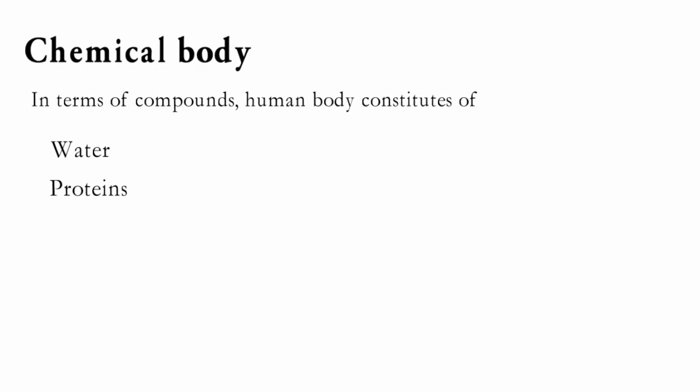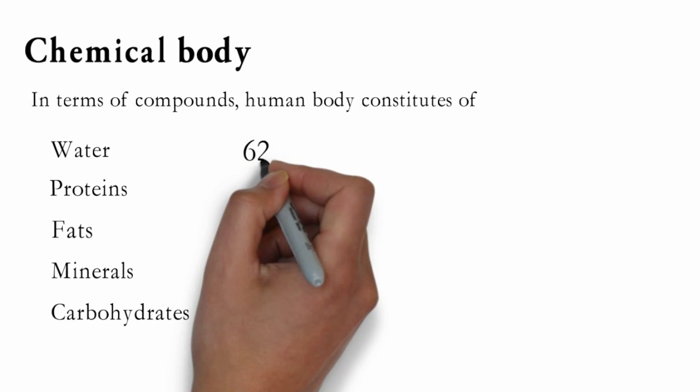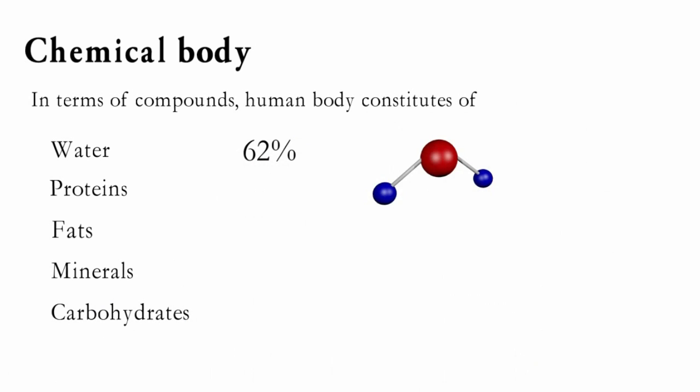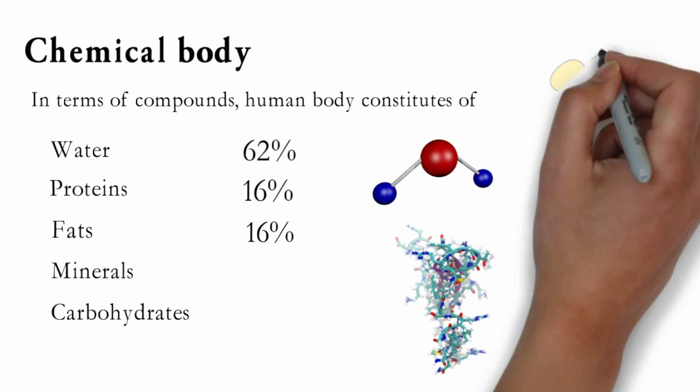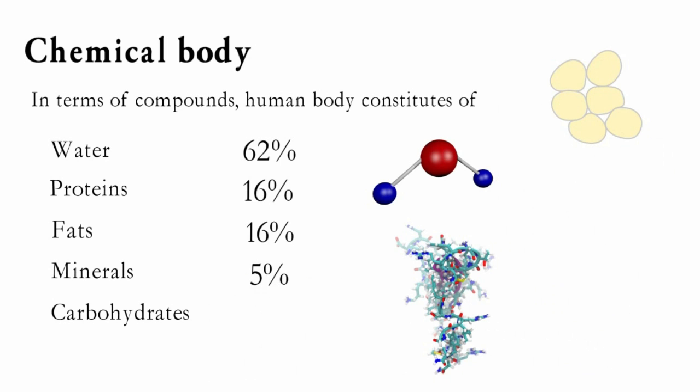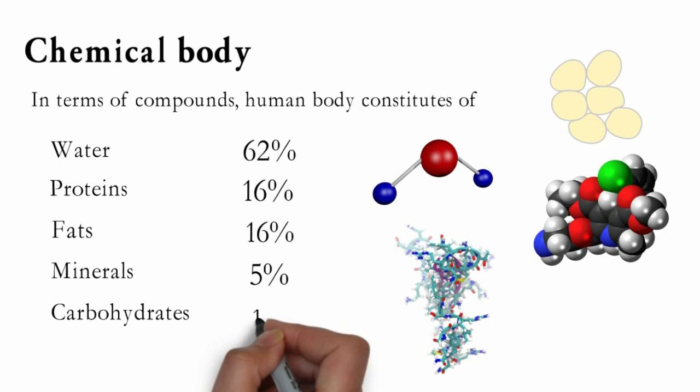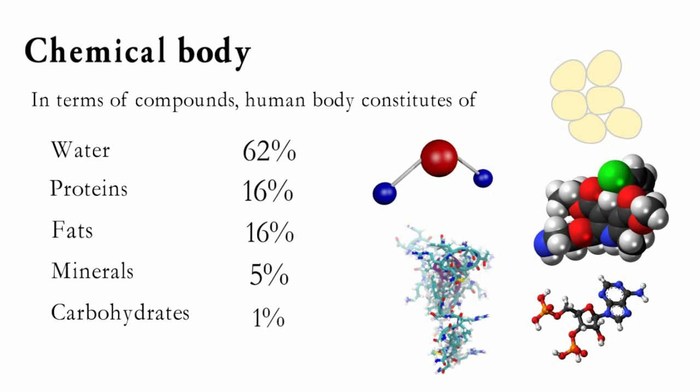human body consists of water, proteins, fats, minerals and carbohydrates. Water is the highest constituent with 62% of body mass. Proteins are about 16% of body mass. Fats are about 16%, whereas, minerals are about 5% and carbohydrates only account for 1% of body mass.